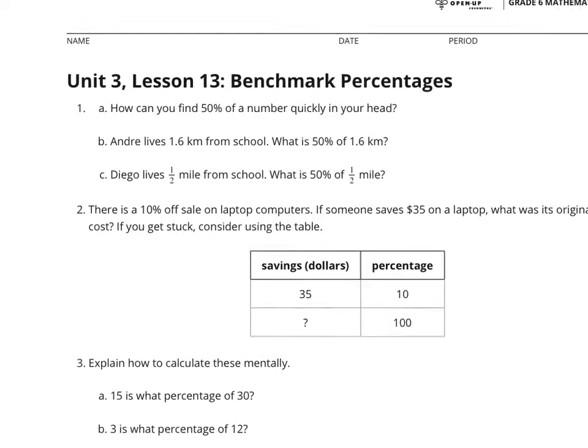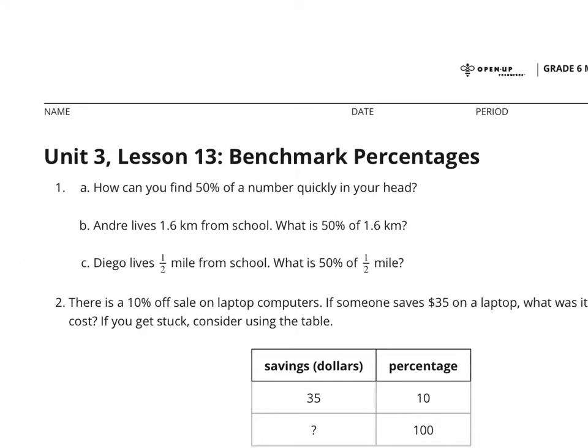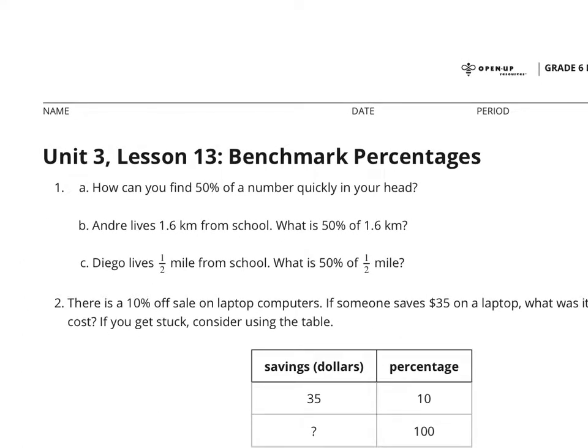If we look at question 1, how can you find 50% of a number quickly in your head? Well, I can think of two options. The first one is you could multiply by 1 half. And the second option is that you could divide by 2.